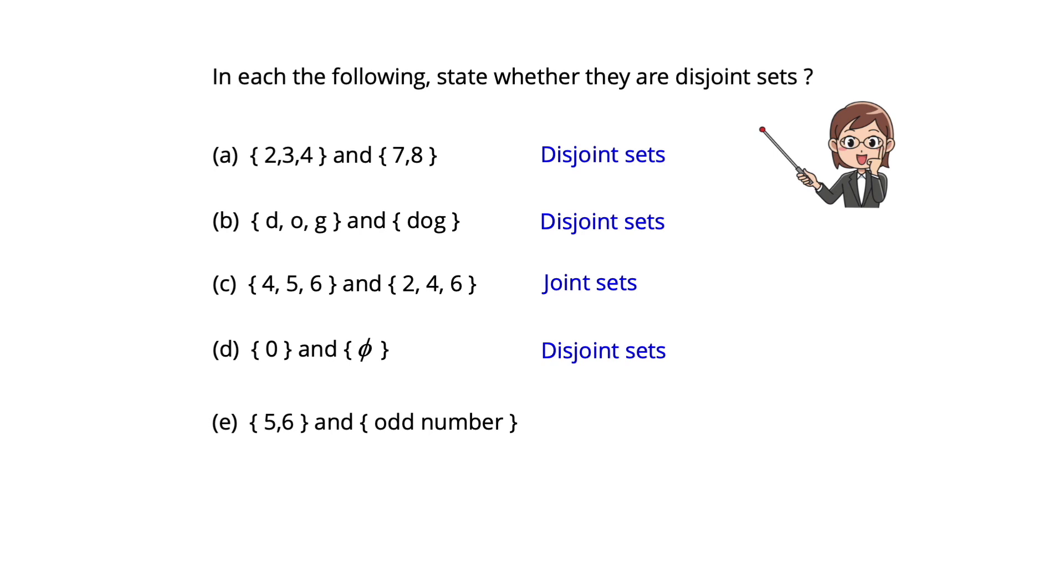E, they are joint sets because they have a common element between them. Both sets have a common element of 5.